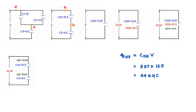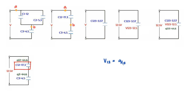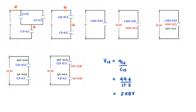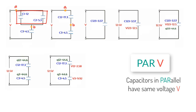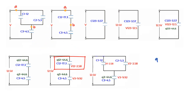Next, find the potential difference across C12: V12 = Q12/C12 = 44.6/17.3 = 2.58 volts. Since C1 and C2 are in parallel, applying 'par V' — capacitors in parallel have the same potential difference — C1 also has a potential difference of 2.58 volts. Therefore, the charge on C1 is Q1 = C1 × V1 = 12 × 2.58 = 31 microcoulombs.